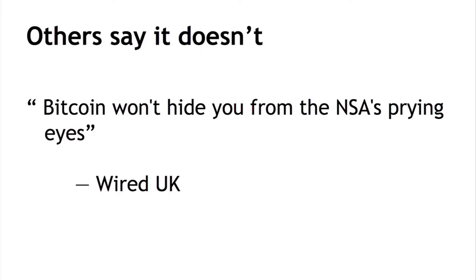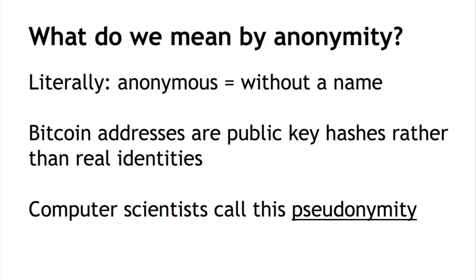Let's look at what the word anonymous means. At quite a literal level, anonymous means without a name. In Bitcoin, addresses are public key hashes instead of real identities. We can interpret this in two ways: interacting without your real name, or interacting without any name at all. If you interpret it as interacting without your real name, then certainly Bitcoin is anonymous in that sense. But we do have these public key hashes that act as pseudo-identities. When computer scientists look at this, they don't use the term anonymous — they call this pseudonymity.